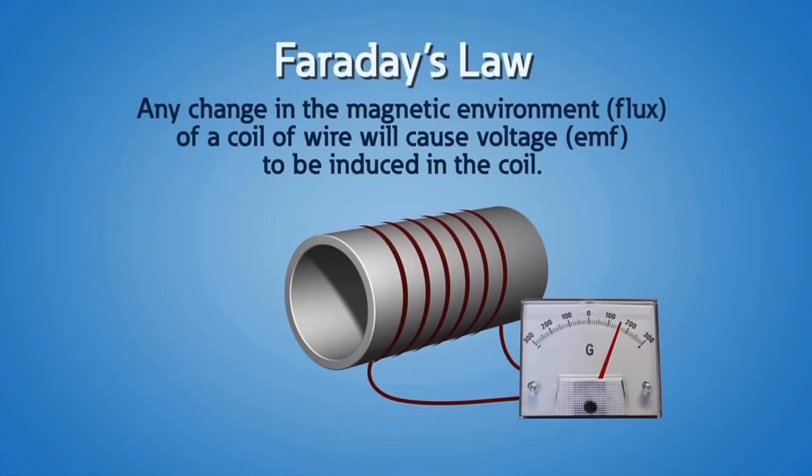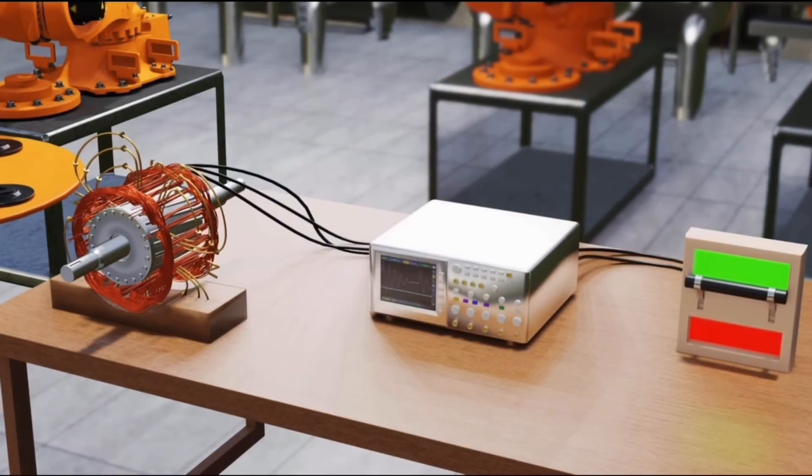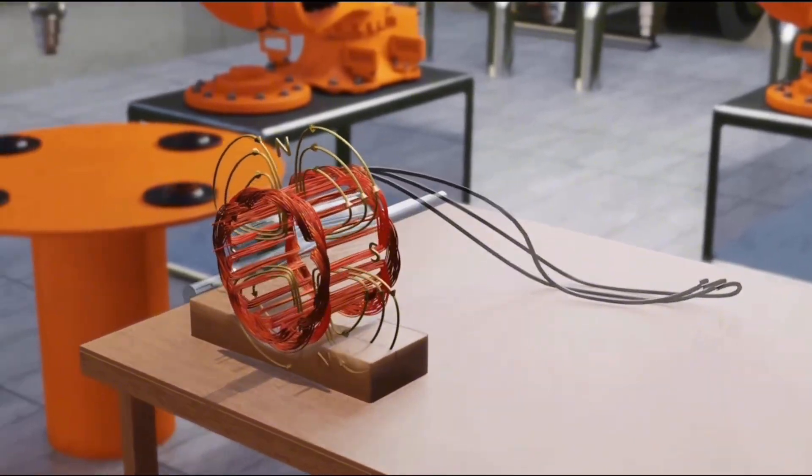In a motor, the current passing through the windings in a stator creates a magnetic field. This field interacts with the rotor, generating motion. Conversely, in a generator, the rotor's movement through the magnetic field induces an electrical current in the windings, converting mechanical energy into electrical energy.